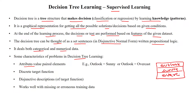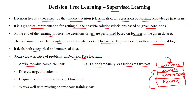The outlook attribute can have values like 'overcast' for another record and 'rainy' for another record. Different values are available for a single attribute — this is called an attribute-value pair. So 'outlook' is the attribute and 'sunny', 'overcast' are possible values, forming attribute-value pairs.